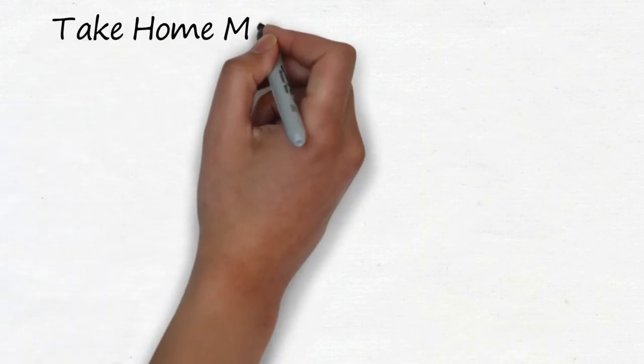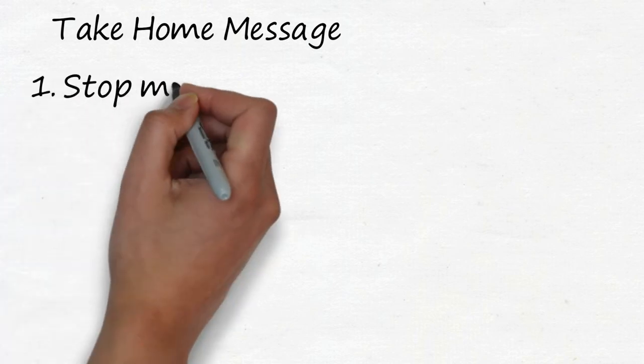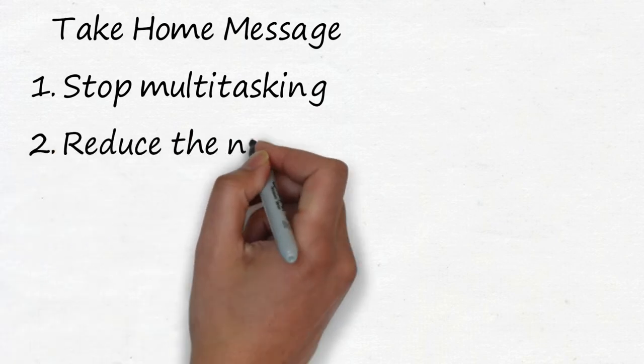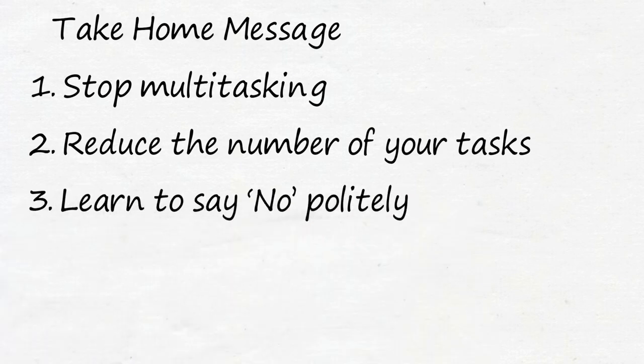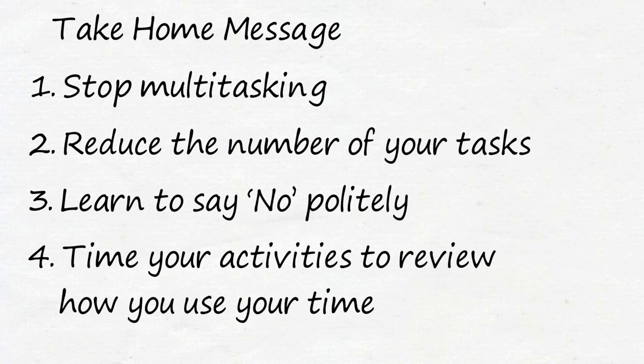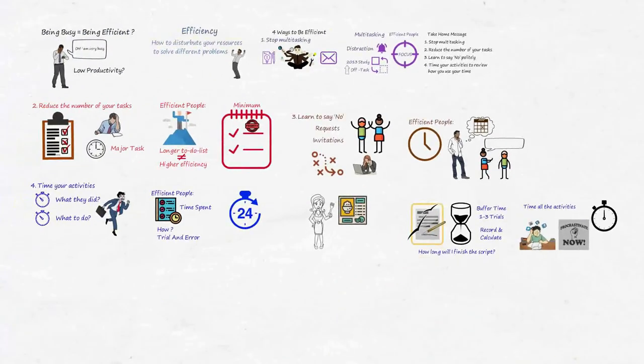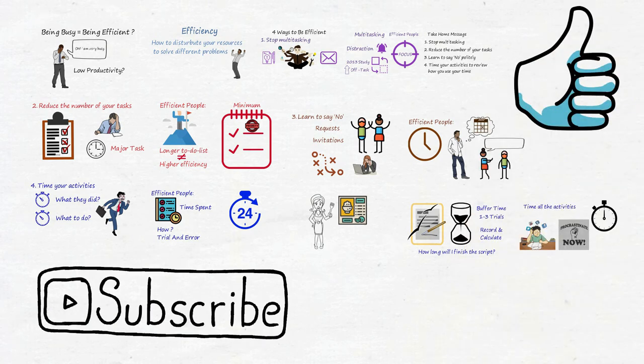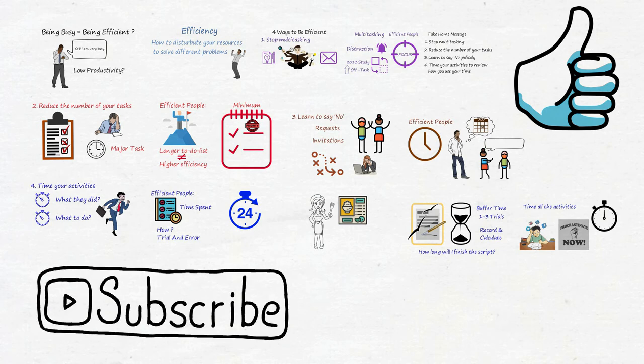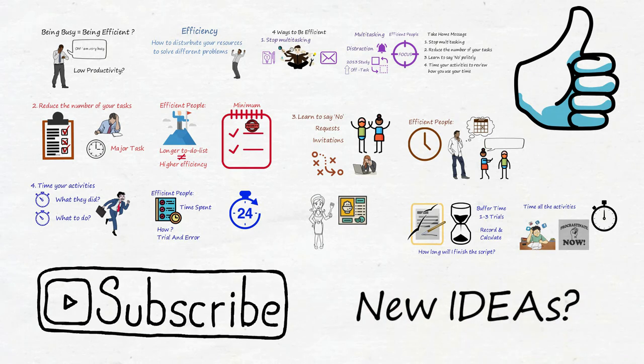To conclude, to be efficient instead of being busy, you need to stop multitasking, stay focused on what you are doing now, reduce the number of your tasks and only one to two important tasks are left on your list, learn to say no, and time your activities to review how you use your time. If you think that this video is good, give me a like. If you want to watch more uploaded videos, you can subscribe to the channel and smash the little bell. If you have any method to become efficient, please write down below. See you in the next video.